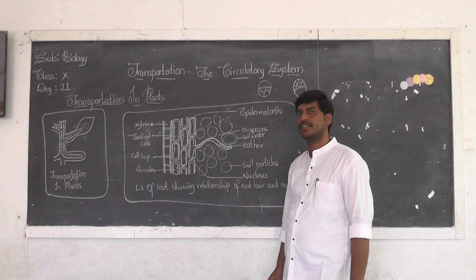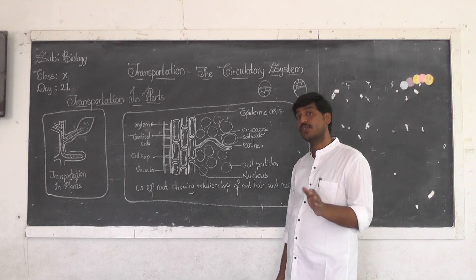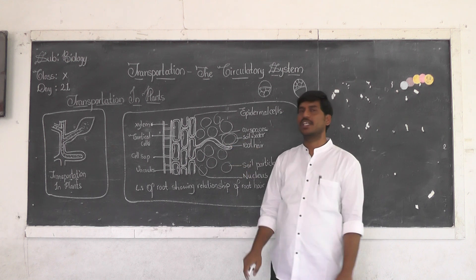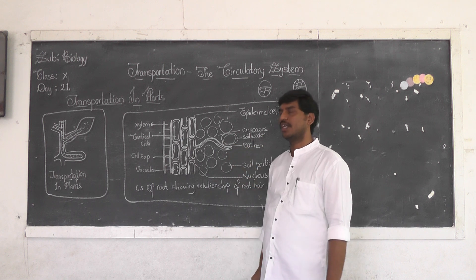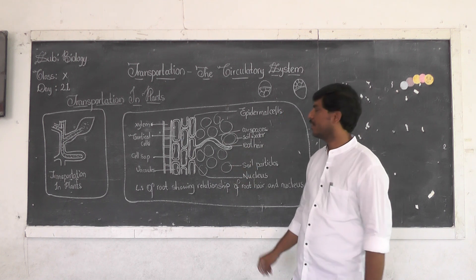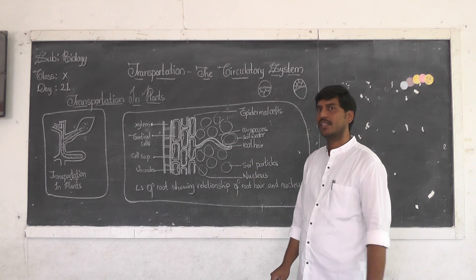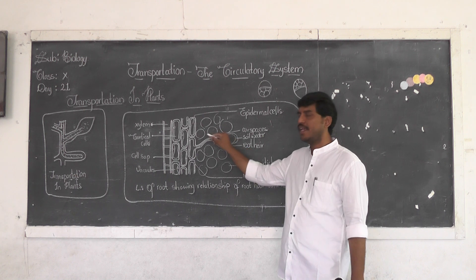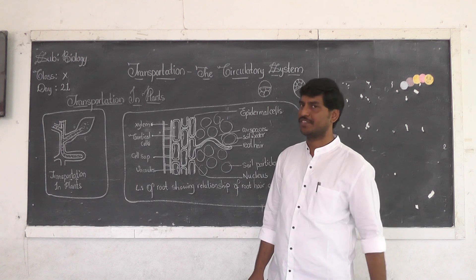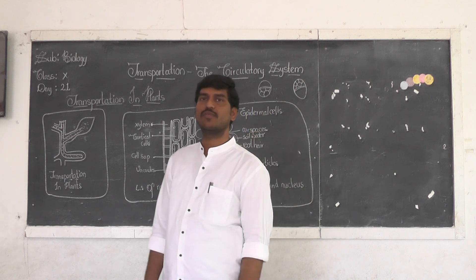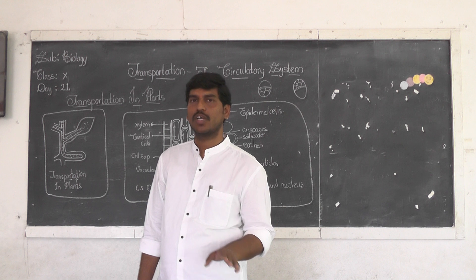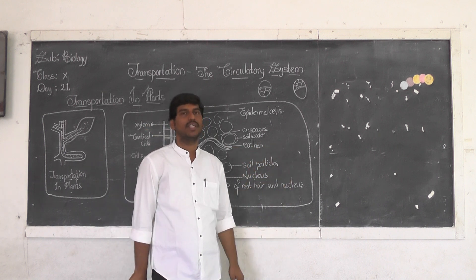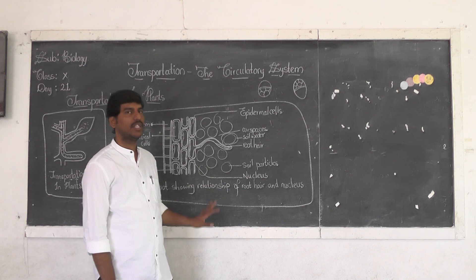Because the concentration of cytoplasm is high and the concentration of soil water is low, water moves from the low concentration region to the high concentration region through a semi-permeable membrane. This process is osmosis, which is defined as the transportation of water from a lower concentration region to a higher concentration region through a semi-permeable membrane. This is what happens during absorption of water and minerals by roots.